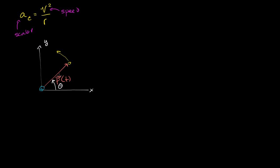So the magnitude of our position vector, even though the direction is going to change, the magnitude is not going to change — it's always going to have length r. This is going in a circle of radius r. We can express the position vector in terms of its components at any given time using engineering notation and basic trigonometry to break down the vector into its components.